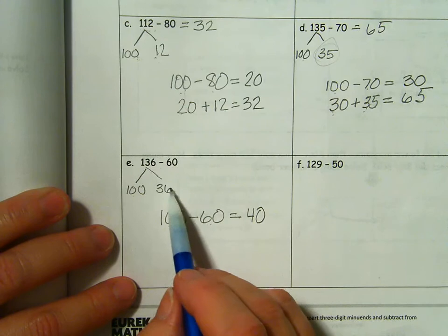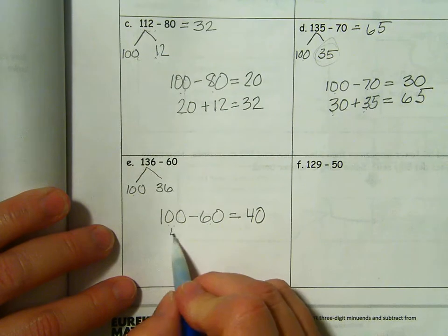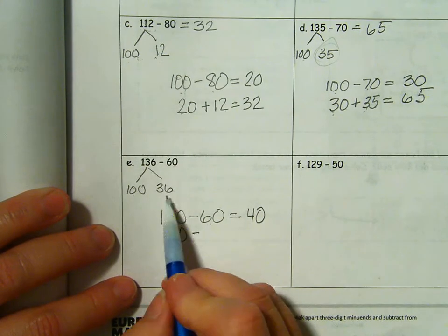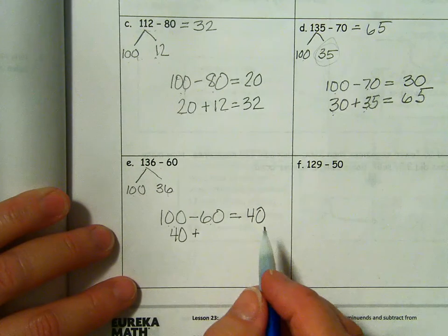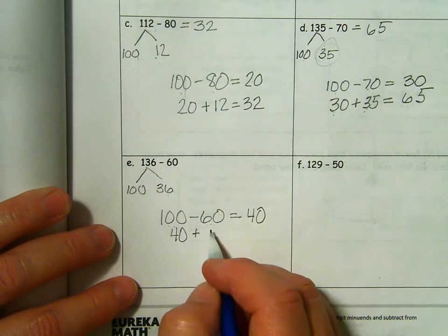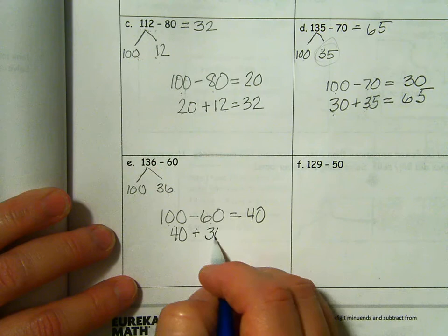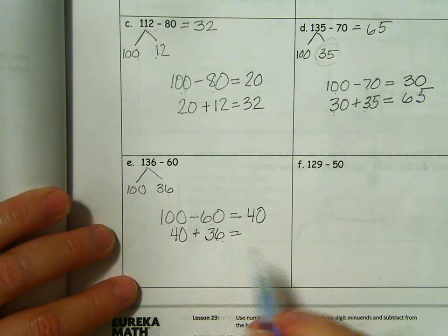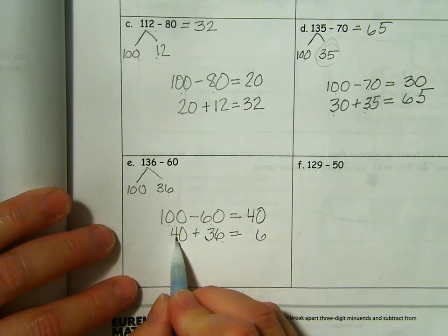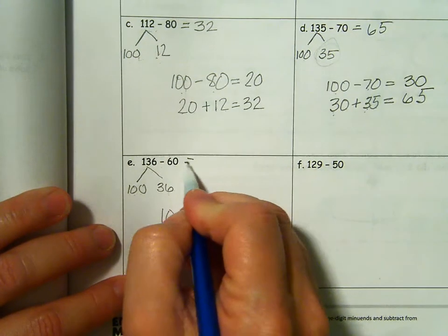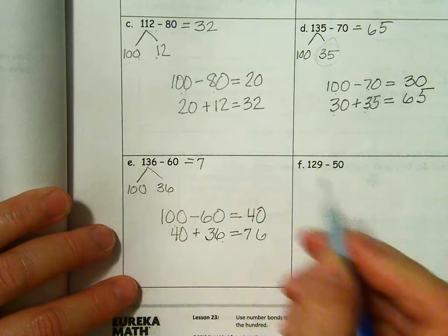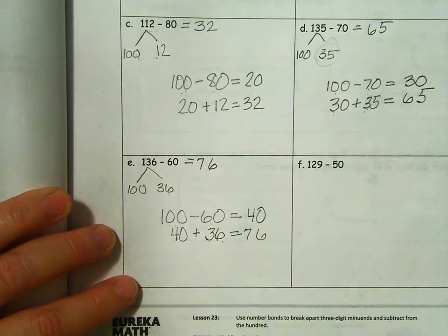100 minus 60 or 10 tens minus 6 tens equals 4 tens or 40. I have to add back in the other part. So I have 40 plus 36. So we have 6 ones and 7 tens. 136 minus 60 is 76.